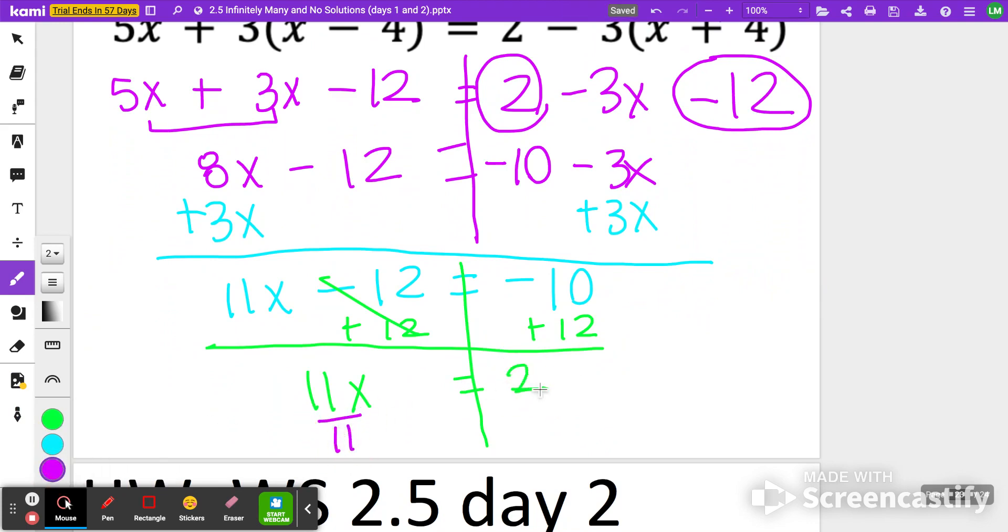Dividing both sides by 11. X is equal to 2 11ths for this last one. So we did end up getting a fraction. If you tried using a decimal, I think it repeats.